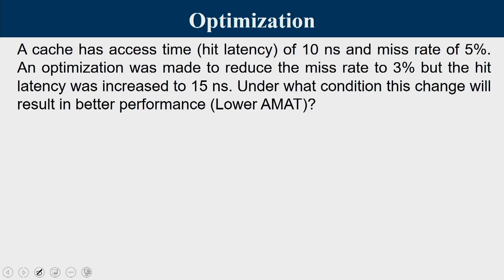Moving to the next question, it is an optimization problem. A cache has a hit latency of 10 nanoseconds and a miss rate of 5%. An optimization was made to reduce the miss rate to 3%, but the hit latency was increased from 10 nanoseconds to 15 nanoseconds as a byproduct. Under what condition will this change result in better performance or lower average memory access time?